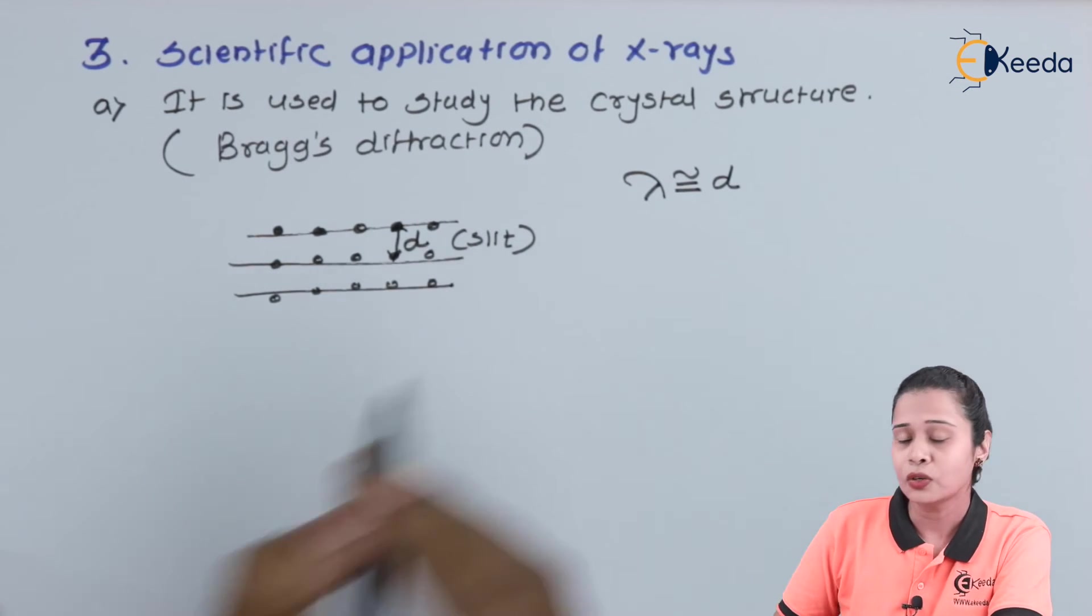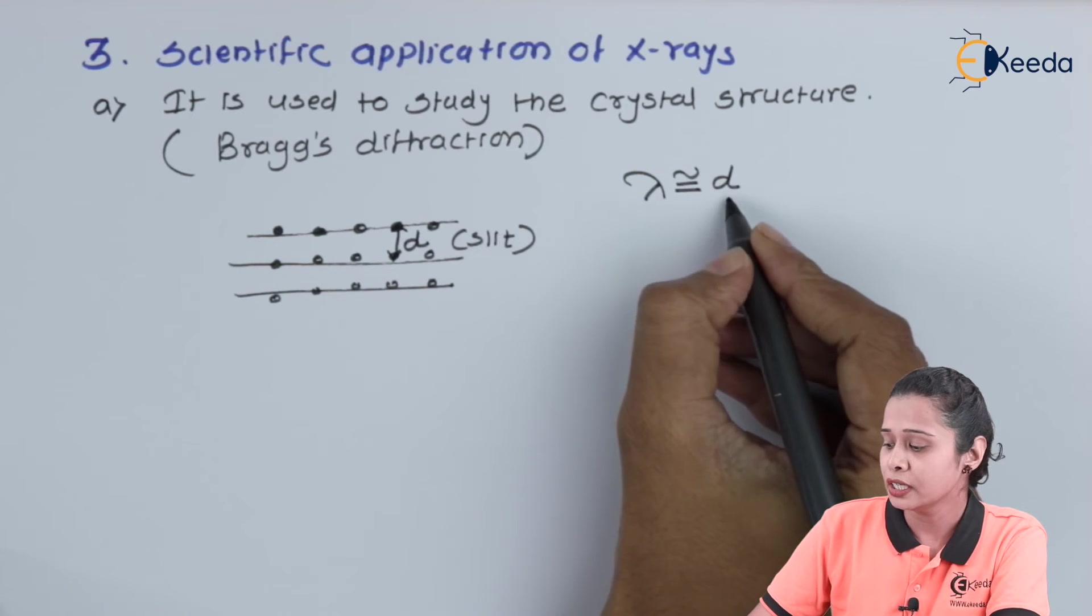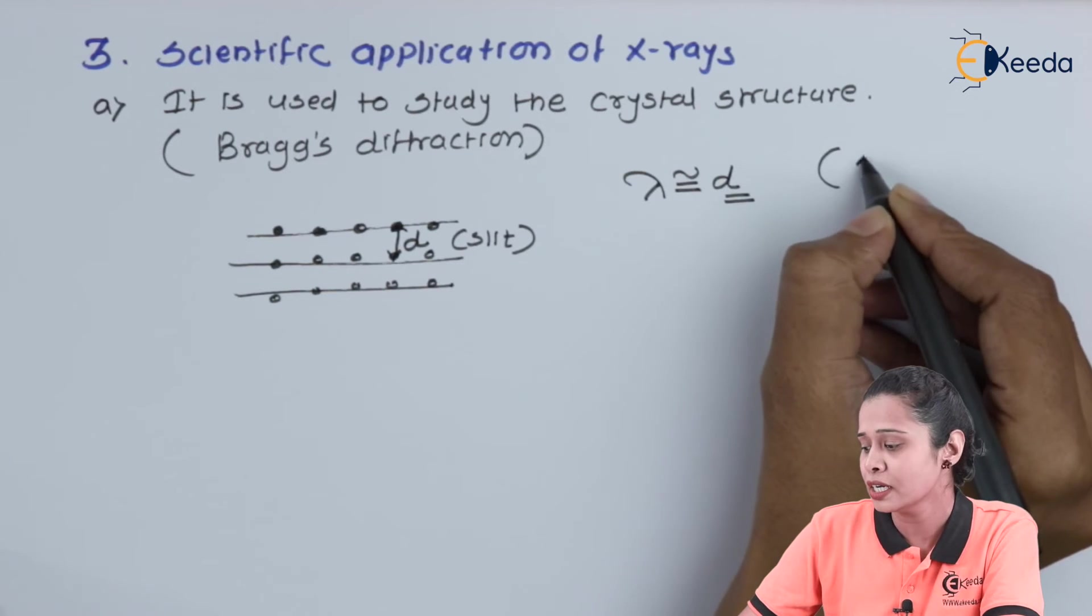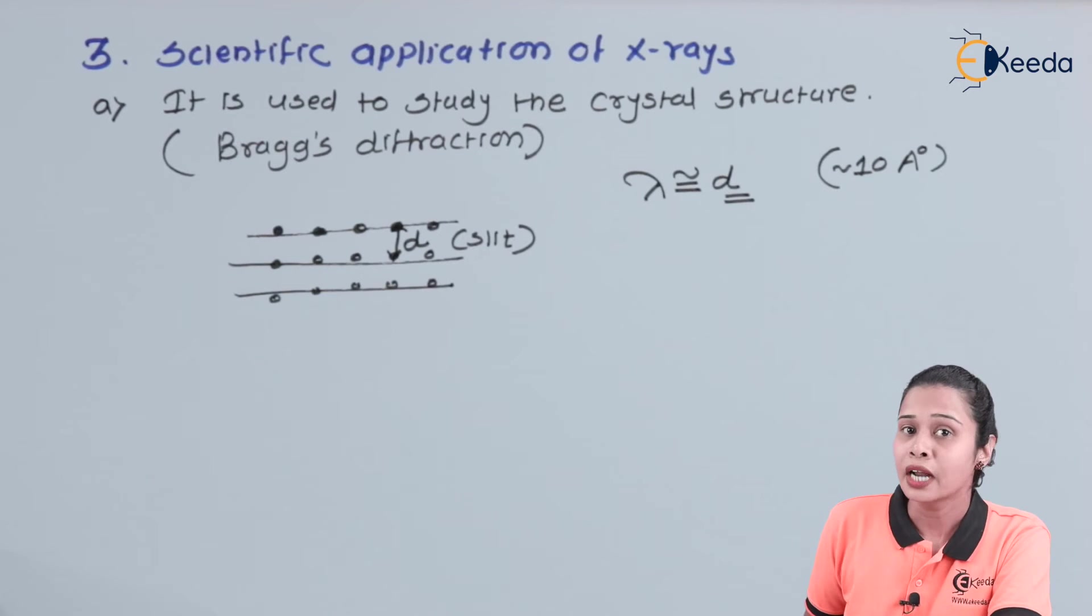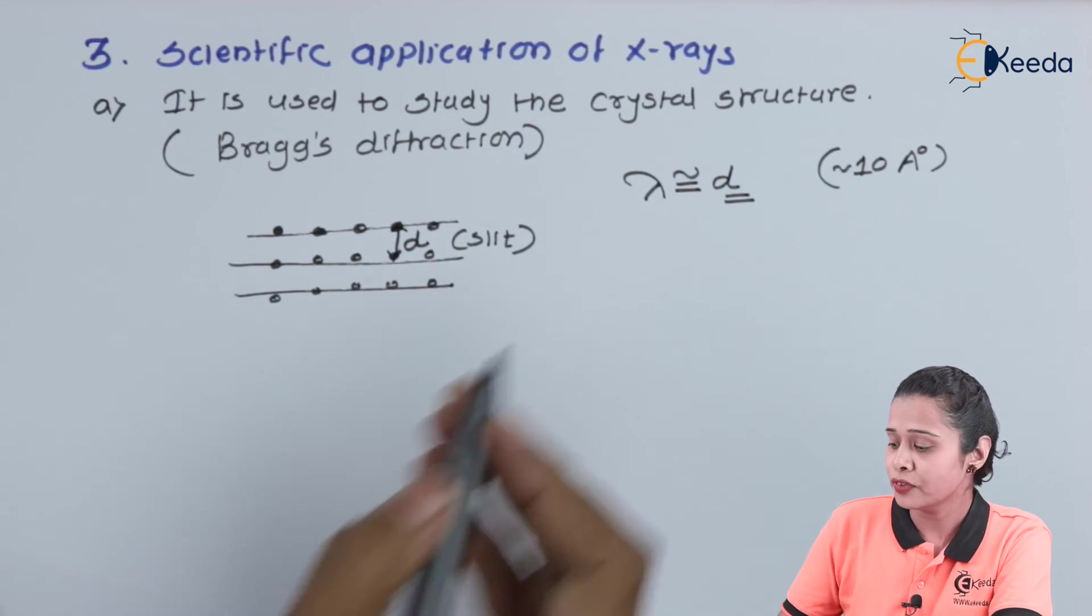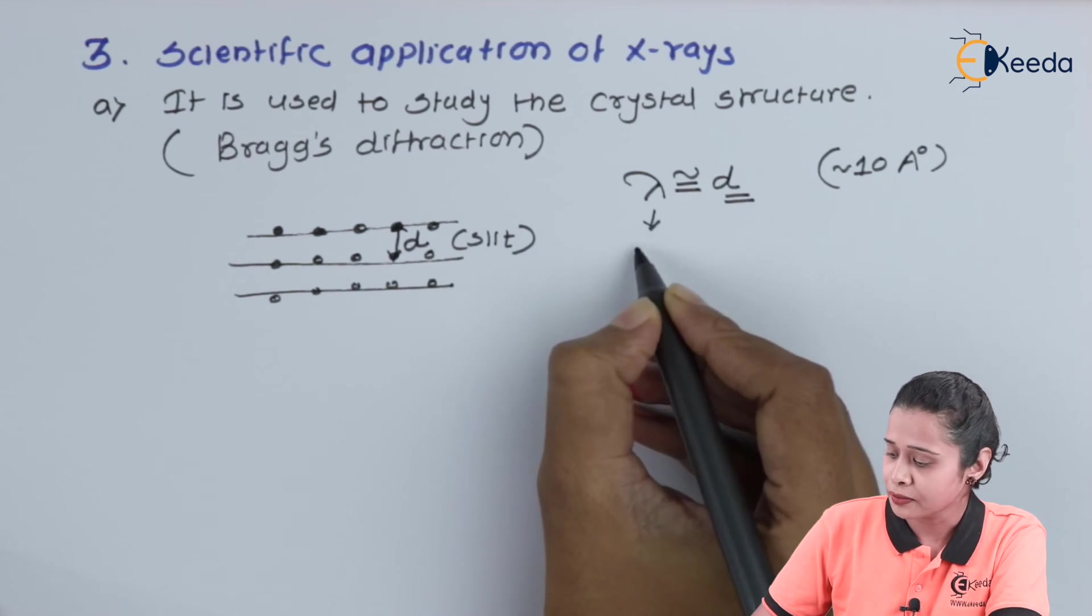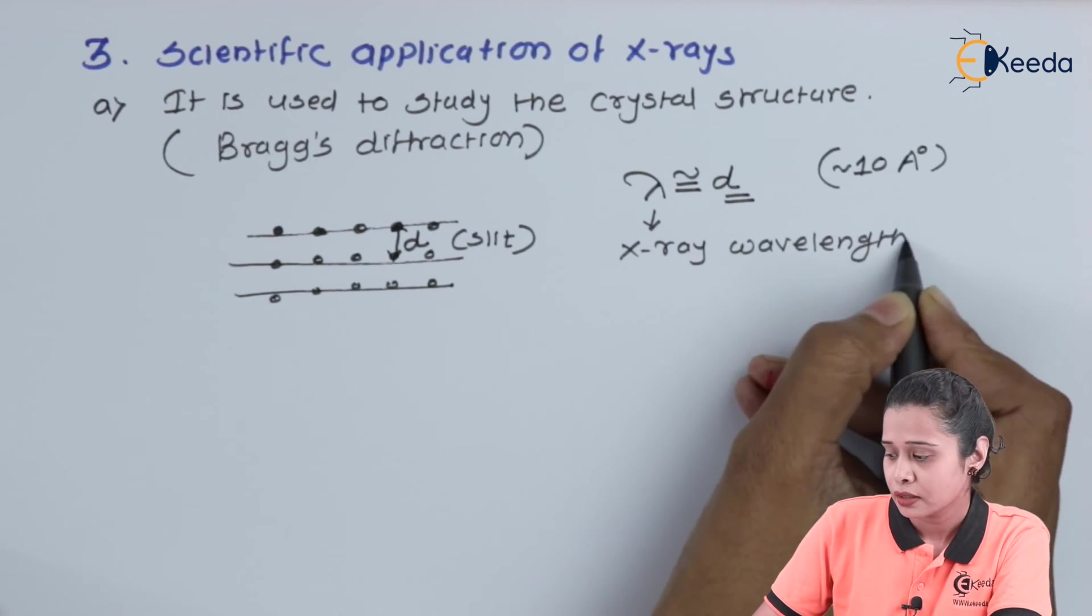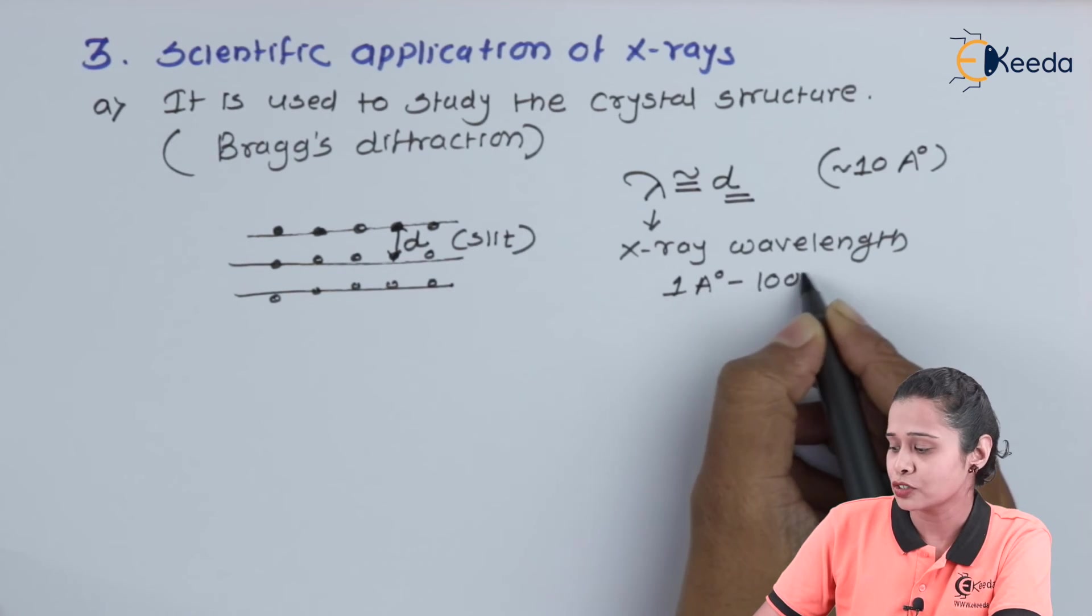Now, we know the interplanar distance in case of the crystal is very, very small. This distance is approximately 10 angstrom unit. Now to study the structure, we require the light wave with a very, very short wavelength and the wavelength of X-ray is in between 1 angstrom unit to 100 angstrom unit.